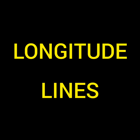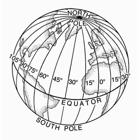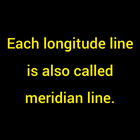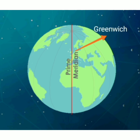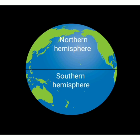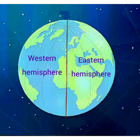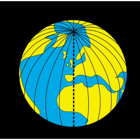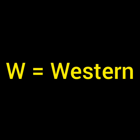Longitude lines. The lines on the globe that go from the north pole to the south pole are the longitude lines. Each line is called a meridian line. The line that passes through Greenwich, a city in England, is known as the prime meridian line and is situated at 0 degree longitude. Just as we divide the earth with latitude lines into northern and southern hemispheres, longitude lines divide it into eastern and western hemispheres. From the prime meridian, there are 180 lines both in the eastern and western hemisphere, marked E for eastern and W for western longitude lines.